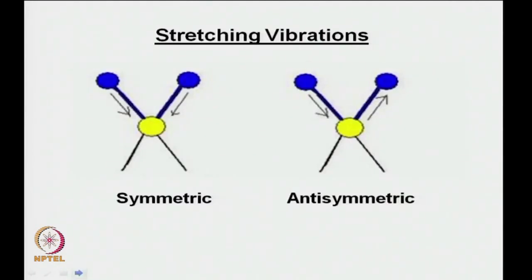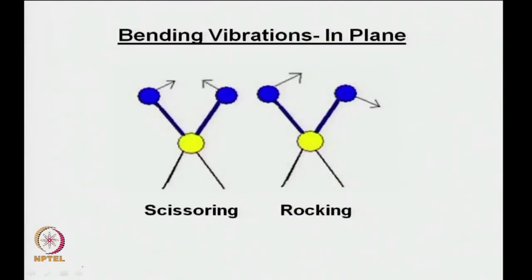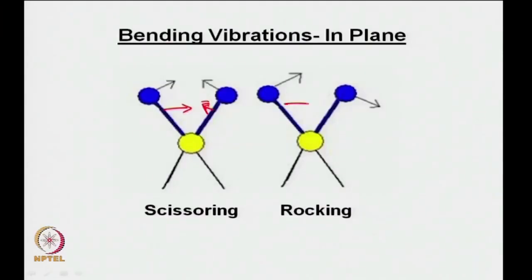Now let us look at some vibrations. There are two types of stretching vibrations: symmetric stretch — both arrows pointing in the same direction — and asymmetric stretch — one bond compressing while the other stretches. Then there are bending vibrations. In-plane bending includes scissoring, where both bonds move toward each other like scissors, and rocking, where both bonds move in the same direction.